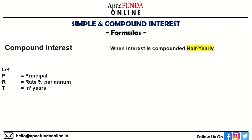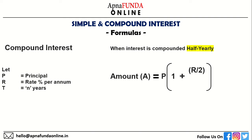When interest is compounded half yearly, you will face some complexity when the time period is in months, years, half yearly, or quarterly — you need to be aware of all these formulas. When interest is compounded half yearly, amount A is equal to principal into 1 plus R by 2 divided by 100, whole to the power of 2N. So the rate of interest becomes half and the time period becomes double.